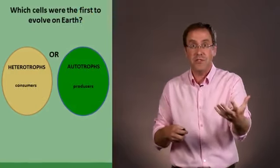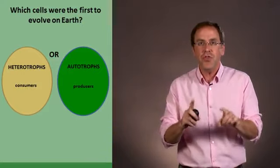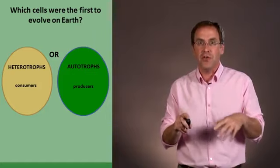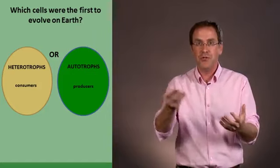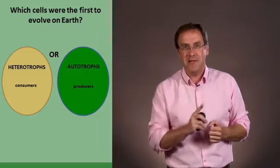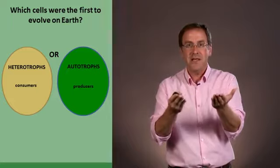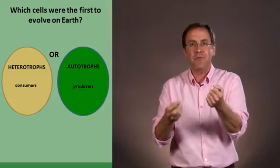Heterotrophies are consumers. Autotrophic organisms are producers. So what do you think were the first cells that evolved on earth, consumers or producers? What experiment can be done to differentiate between these two or what would be the evidence that would support the two?